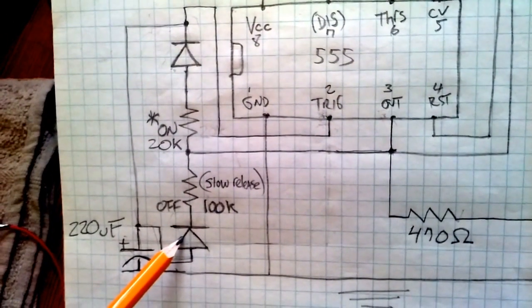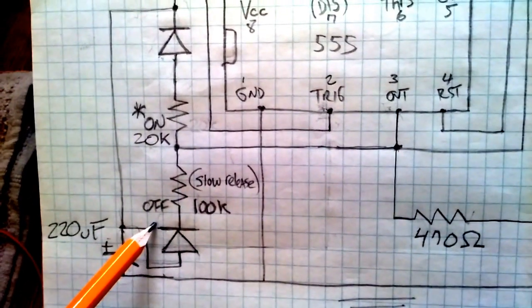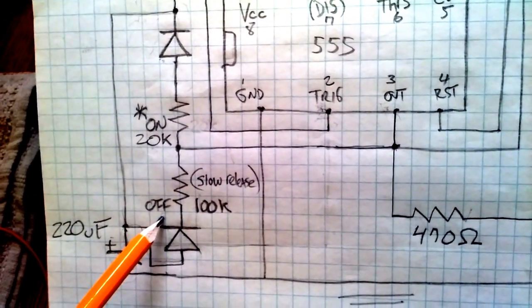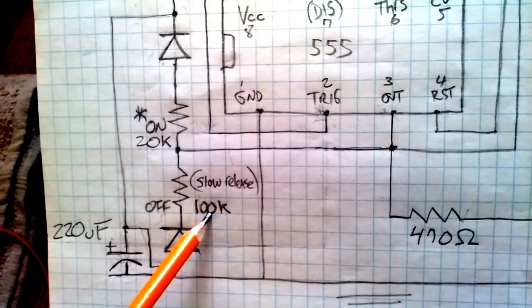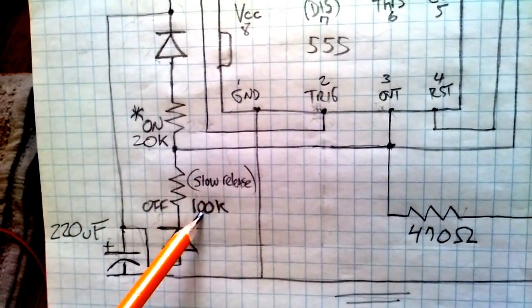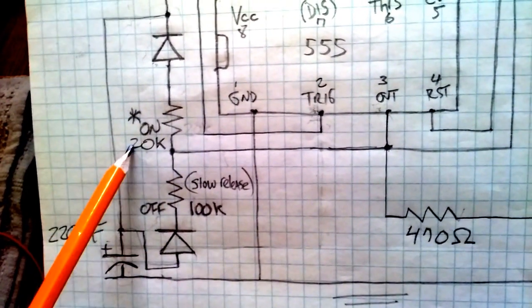there's a longer off time than on time in this circuit. I wanted that, like if you're watering a plant or something as an experiment. The 100k resistor is responsible for what I call a slow release, and the 20k is our on time. That is all dependent on the trigger, pin 2 on the 555 chip.